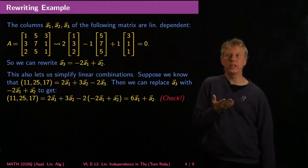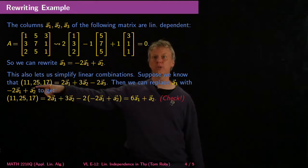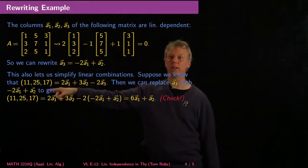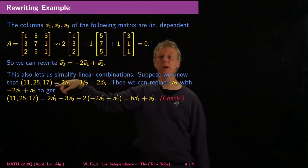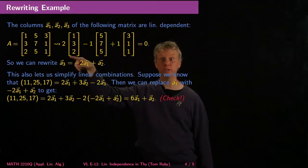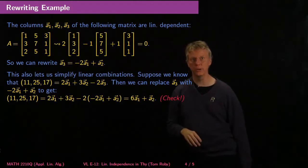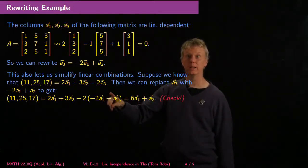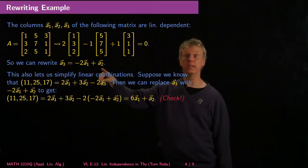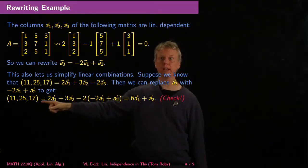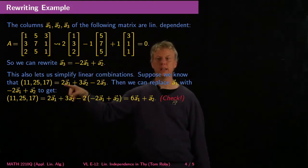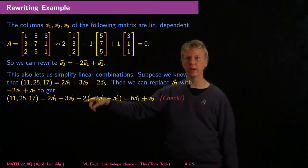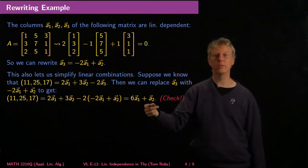So what? This lets us simplify our linear combinations. Suppose we know that the vector (11, 25, 17) is the linear combination 2·A1 + 3·A2 - 2·A3 — you can check this is true. Then I can replace A3 with -2·A1 + A2. Substituting that in, I get that the same output equals 6·A1 + A2. Let's verify: 6 times the first column plus the second column gives 11, then 6·3 + 7 = 25, and 6·2 + 5 = 17. So (11, 25, 17) can be written as a linear combination of just these two vectors.